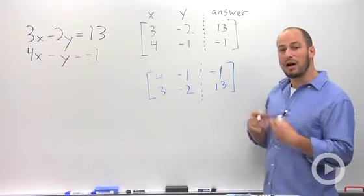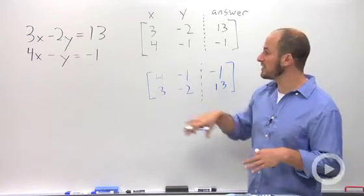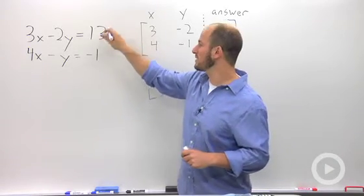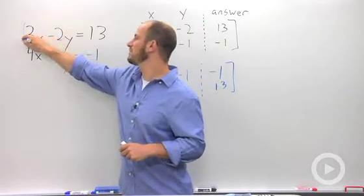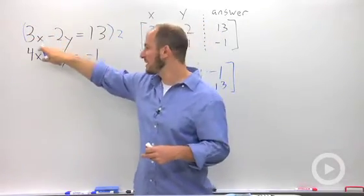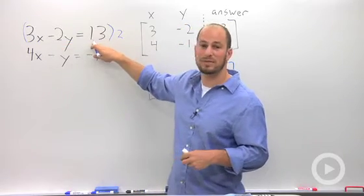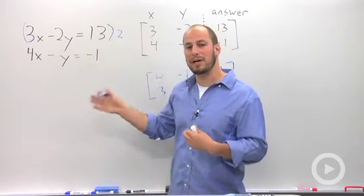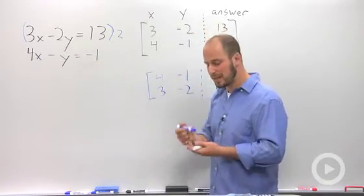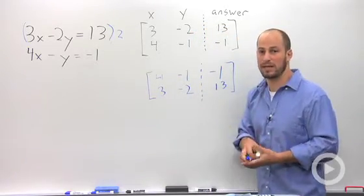Going back to our equations, we could just as easily say that this equation we can multiply by 2. So this we could say, let's multiply this by 2, and then this becomes 6x minus 4y is equal to 26. That's still the same equation as long as we distribute that 2 all the way through. We can do the same thing with matrices, and it's called a scalar multiple.